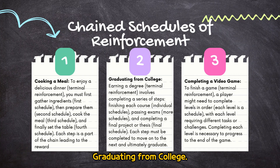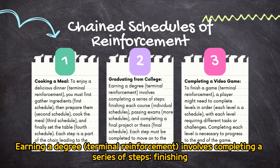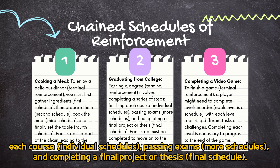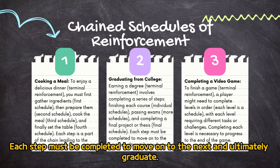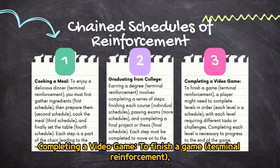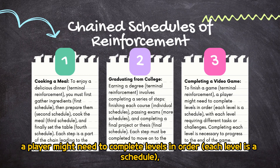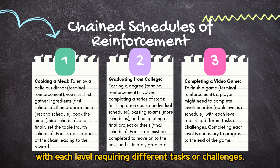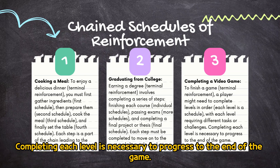Graduating from college: earning a degree (terminal reinforcement) involves completing a series of steps — finishing each course (individual schedules), passing exams (more schedules), and completing a final project or thesis (final schedule). Each step must be completed to move on to the next and ultimately graduate. Completing a video game: to finish a game (terminal reinforcement), a player might need to complete levels in order, with each level requiring different tasks or challenges. Completing each level is necessary to progress to the end of the game.